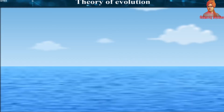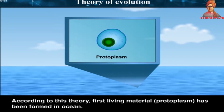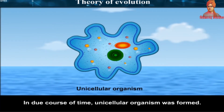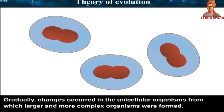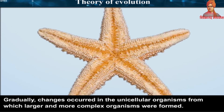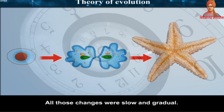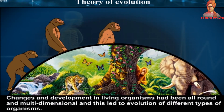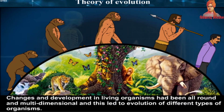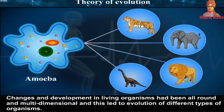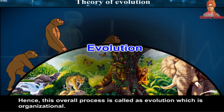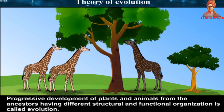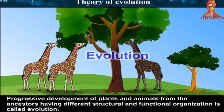According to the theory of evolution, the first living material — i.e., protoplasm — was formed in the ocean. In due course of time, unicellular organisms were formed, and gradually changes occurred in those unicellular organisms from which larger and more complex organisms were formed. All those changes were slow and gradual, spanning almost 300 crore years. This led to the evolution of different types of organisms, and this overall process is called evolution. Progressive development of plants and animals from ancestors having different structural and functional organization is called evolution.